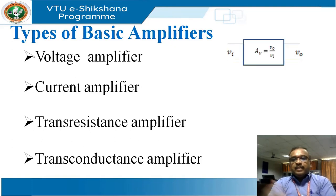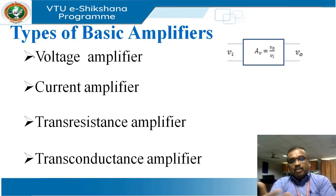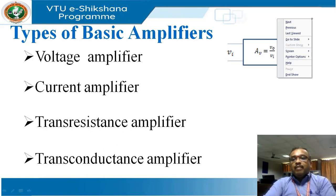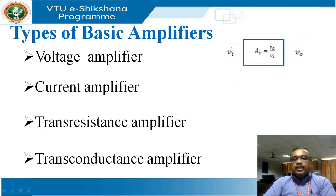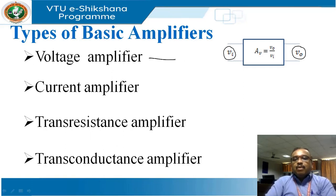A voltage amplifier is simple to imagine: we apply the input voltage and expect an output voltage, and the box connected between input and output is the amplifier. The gain is AV = V0 divided by Vin. In a voltage amplifier, both input and output quantities are voltages, and what we get as gain is a voltage gain — hence it is called a voltage amplifier.